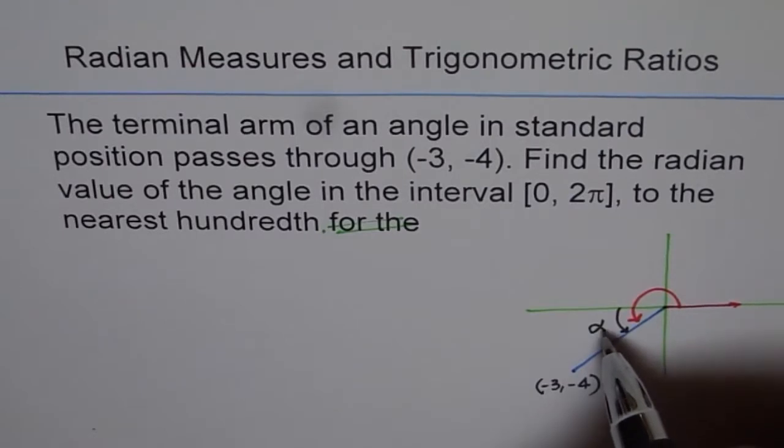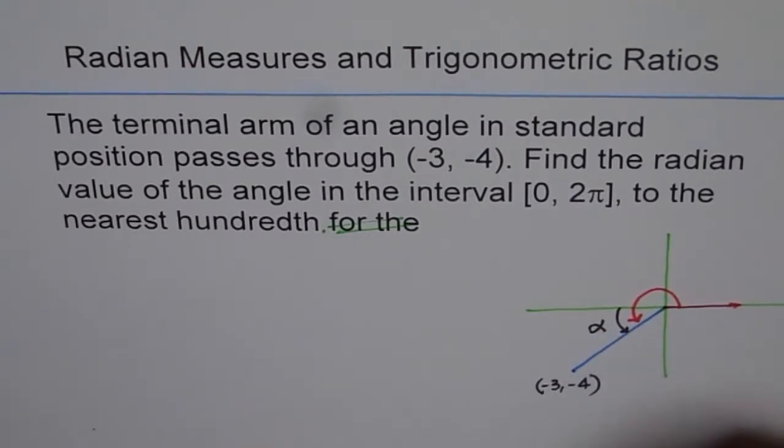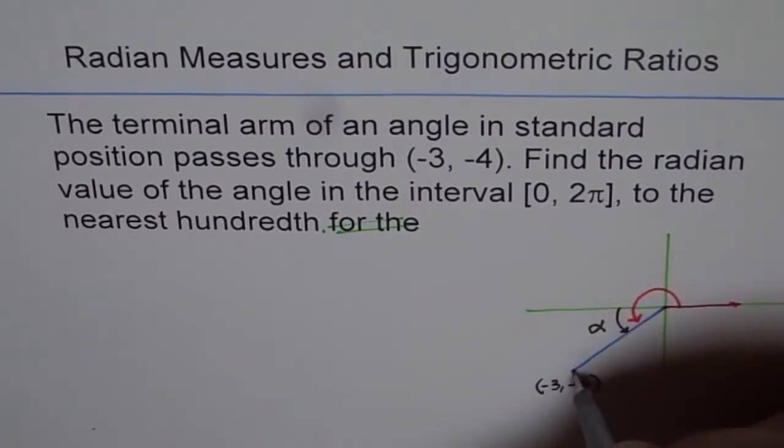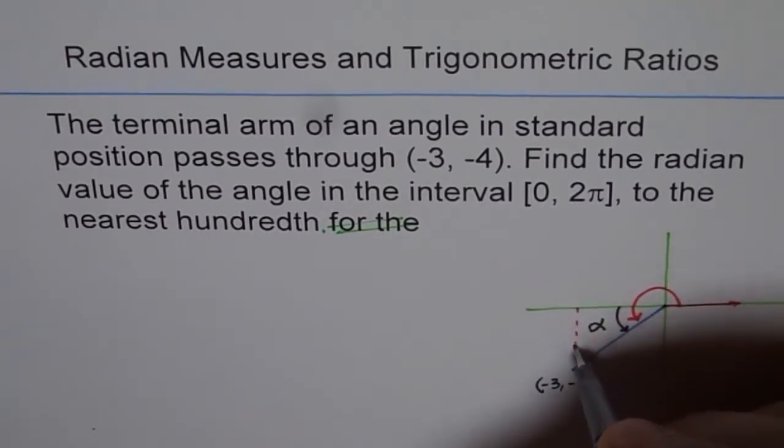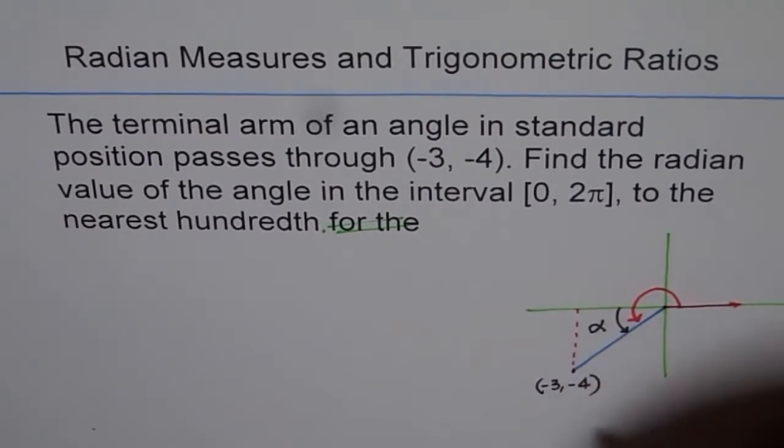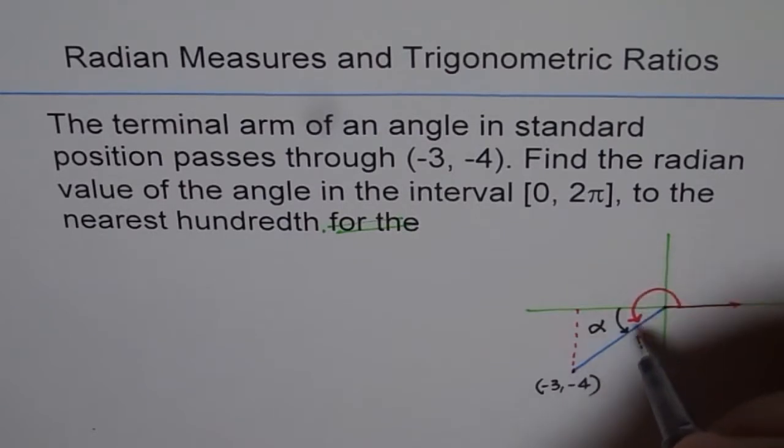So let's find the related acute angle alpha. Now to find this what should we do? We can consider this triangle. Now this triangle, and when we say related acute angle that means this angle is equal to... I'm drawing another triangle in quadrant 1.